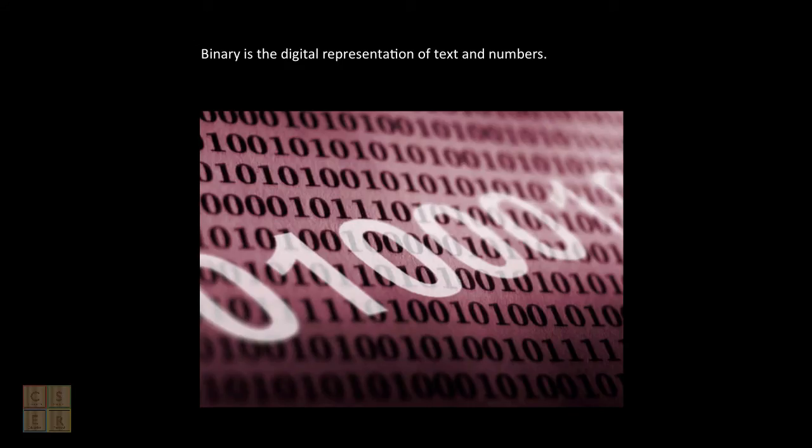Computers do this representation using a binary system. Binary means it is composed of two parts, on or off. Using this system we can give the off switch a zero and the on switch a one.